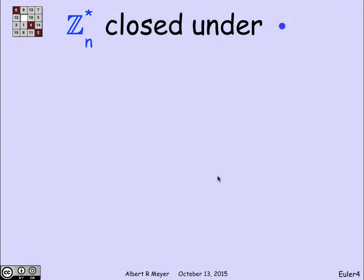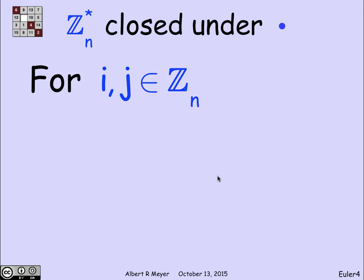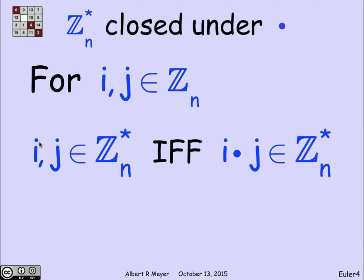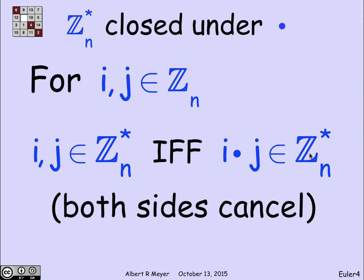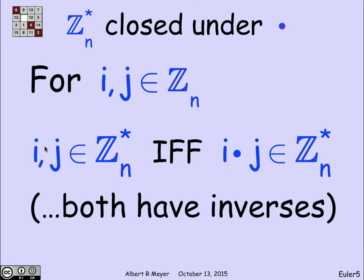The first remark is that ZN* is closed under multiplication. That is to say, if i and j are in ZN*, then so is their product. In fact, i and j are in ZN* if and only if their product is in ZN*. You can prove this a lot of different ways. You could prove it by observing that if i cancels and j cancels, then i times j cancels, because you can cancel i first and then j. Likewise, if i has an inverse and j has an inverse, then the inverse of ij is j inverse times i inverse.